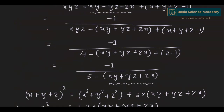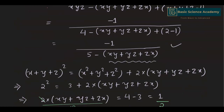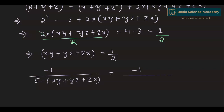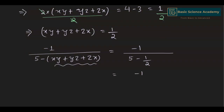Now putting this value into the equation: minus 1 divided by 5 minus (xy plus yz plus zx) equals minus 1 divided by 5 minus 1/2, which is minus 1 divided by 9/2. This equals minus 2 divided by 9. So our answer is minus 2 over 9.